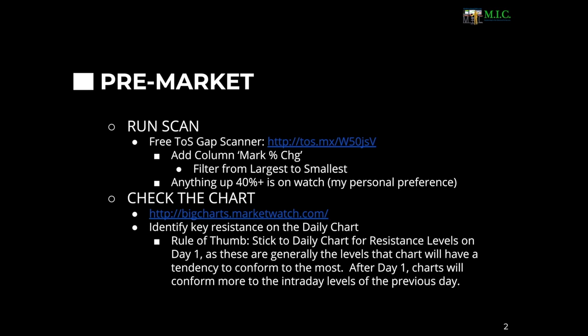This is a free scanner for thinkorswim — it'll show you the gappers. You can copy that link and paste it in your thinkorswim using what's called 'open shared items' — just Google how to do that, there are many videos out there. Then you want to add a column on that scanner for 'mark percent change.' That percent change reflects pre-market data. Filter those from largest to smallest if you want to see the biggest gappers. Anything up 40% or more is generally what's on my watchlist — just my personal preference.